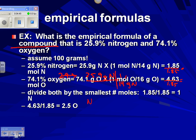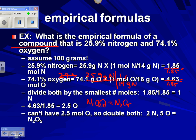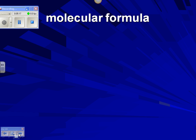This means for every one nitrogen we have two and a half oxygens. Since we can't have half an oxygen, we double everything. Doubling both gives us a nice whole-number ratio of N2O5. That's the empirical formula for a compound that is 25.9% nitrogen and 74.1% oxygen.